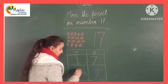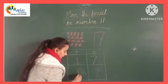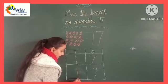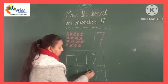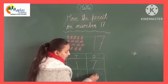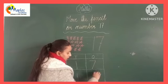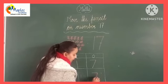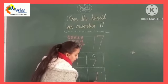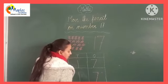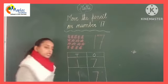Again make a standing line, now make a sleeping line and make a slanting line. Like this. It is called number 17.